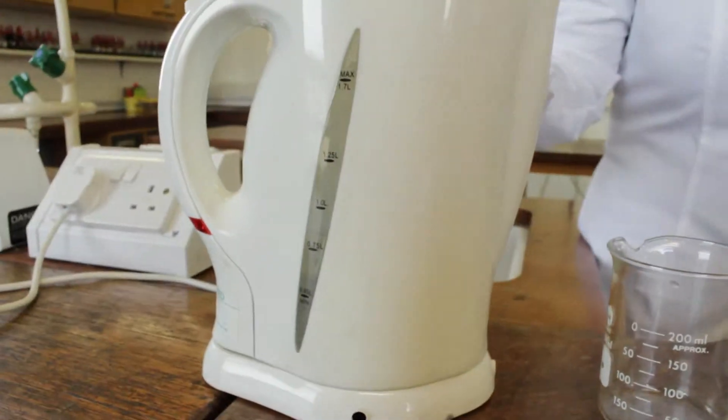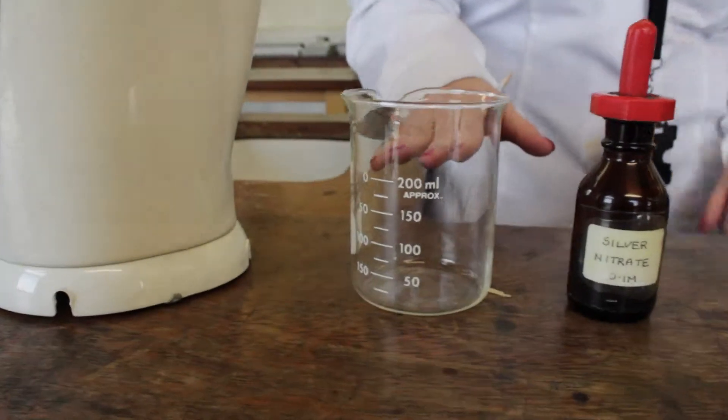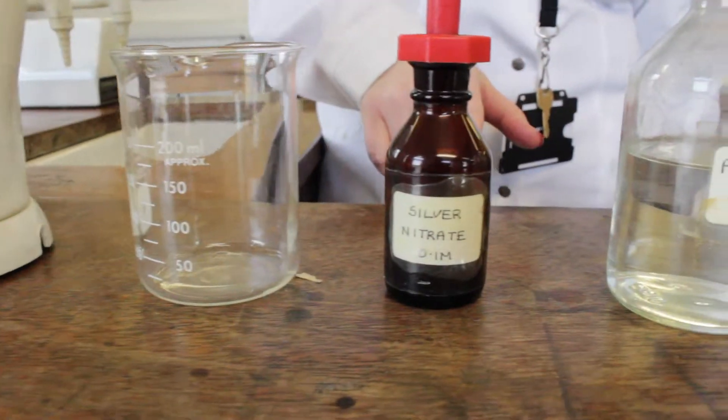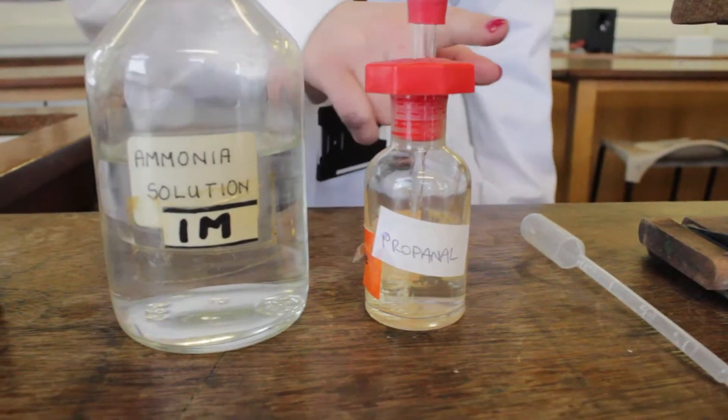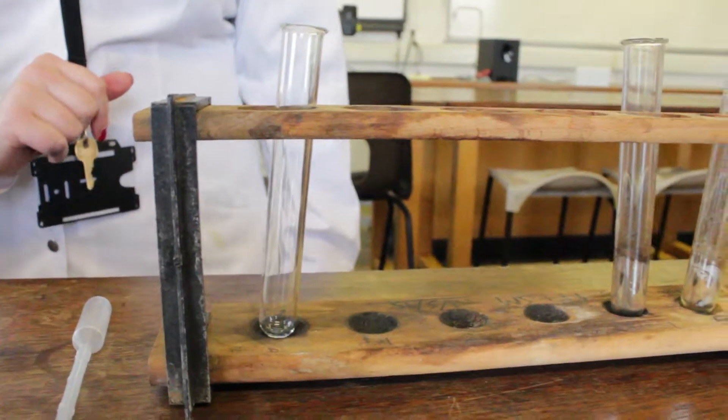We have some hot water, a beaker, silver nitrate solution, ammonia, propanol, a pipette and a clean test tube.